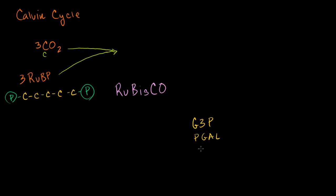G3P is a three-carbon chain with a phosphate group. In the last video, when I started with six carbon dioxides and six ribulose biphosphates, I ended up with 12 of these. Now with three and three, I'm going to end up with six G3Ps. The math works out: three carbons plus three times five carbons is 18 carbons total, and six times three carbons is also 18 carbons. But there are actually some intermediary steps.